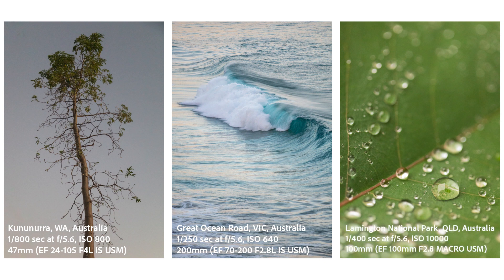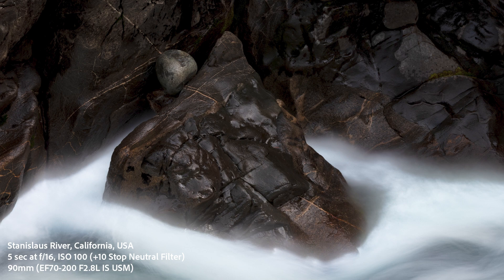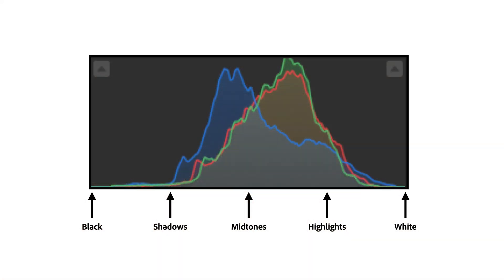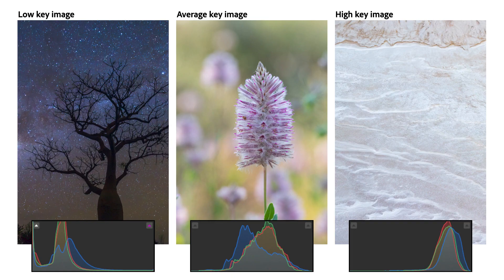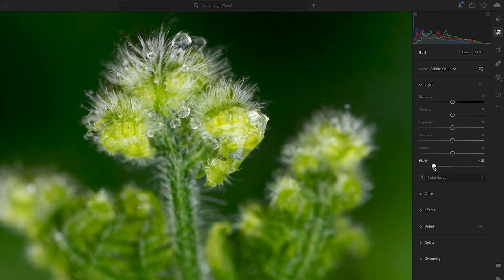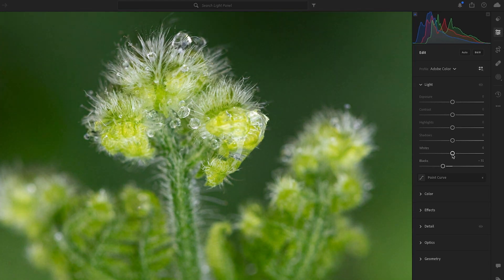Fortunately, in most scenarios, we can expose for the highlights, and while the shadows may be too dark in the original capture, we can use Lightroom to lighten them. When editing photos, we can use the histogram as a reference. The histogram is a visual representation of the dynamic range of your image, plotted from black on the left to white on the right. The height of the column shows how many pixels in the image have that value, and monitoring it is an excellent way to prevent important details in either the highlights or shadows from being pushed to pure black or pure white.